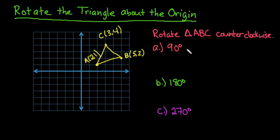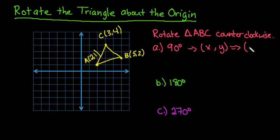So what's going to happen with a 90-degree rotation is you're going to start with your original coordinate (x, y). What's going to happen is it's going to switch your x and y coordinates, and it's also going to change the sign. Basically, we want to rotate this into quadrant 2, which is a 90-degree rotation.